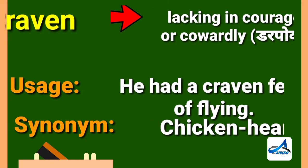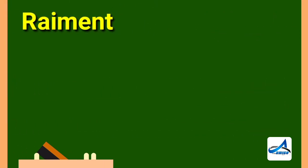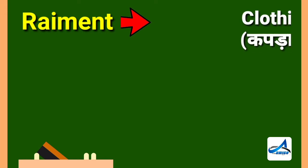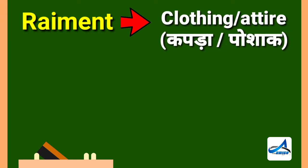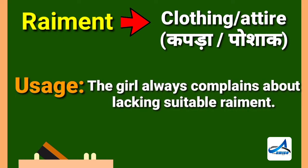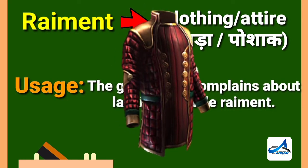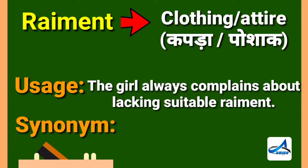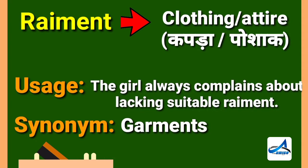The next word is raiment. Raiment means clothing, or you can say attire. Its Hindi meaning is 'kapda ya fit poshaak.' Now look at its sentence: the girl always complains about lacking suitable raiment. Its synonym is garments.